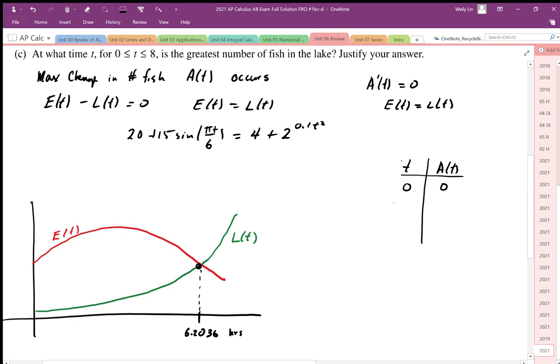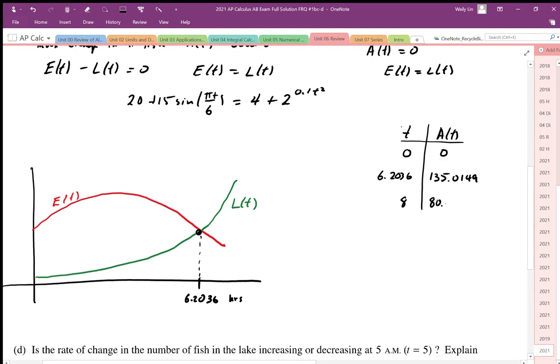We can integrate this accumulation function. At 6.2036, calculating the net area or net accumulation by integrating gives us 135.0149. At t = 8, when we test the other endpoint, we get 80.9200.